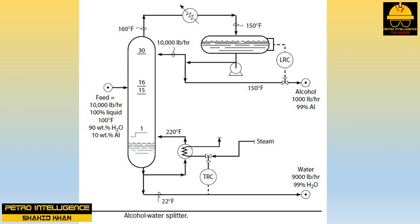Now let's look at the reflux drum. The incremental reflux flow comes from this drum, but the liquid in this drum comes from the condenser. The feed to the condenser is vapor from the top of the tower. Hence, as we increase the reflux flow, the vapor rate from the top of the tower must increase. One way of summarizing these results is to say that the reflux comes from the reboiler.